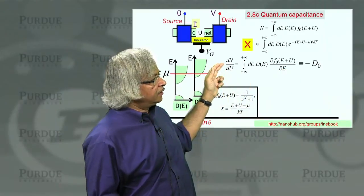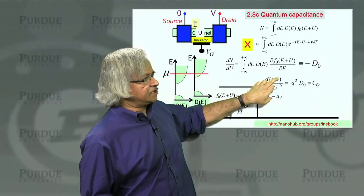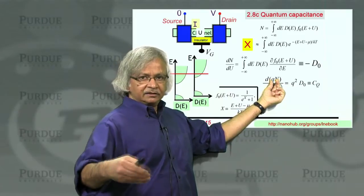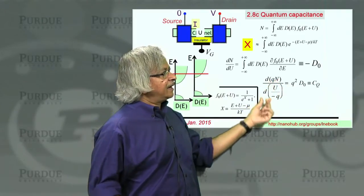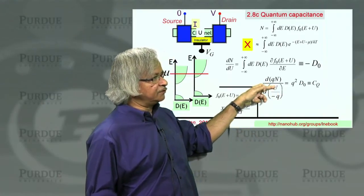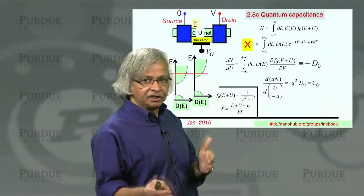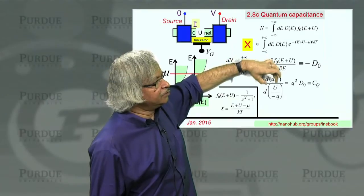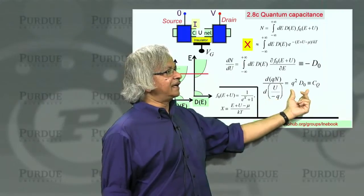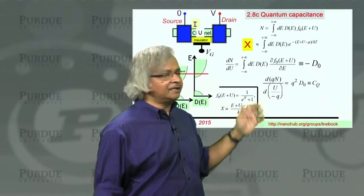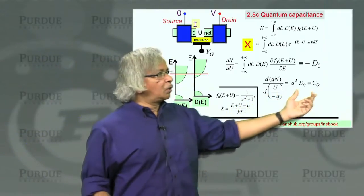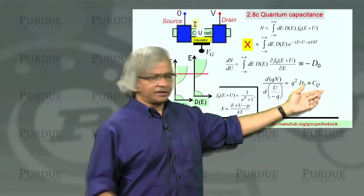We can write the change in charge — that is, d(qN) — due to a change in the potential in the channel. The potential energy in the channel is U, and dividing by q gives the change in potential. So this is like dQ/dV. That quantity is q squared times D0, and dimensionally it is like a capacitance because it's dQ/dV. That's what is called the quantum capacitance.